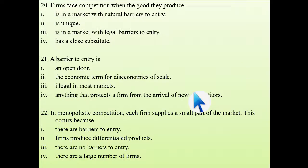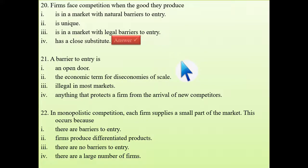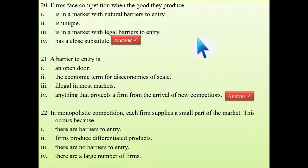Twentieth question: firms face more competition when the good they produce has a close substitute. The more close substitutes your product has, the more competition you face — even a small price increase will cause people to switch to the substitute. Twenty-first question: a barrier to entry is anything that protects a firm from the arrival of new competitors.